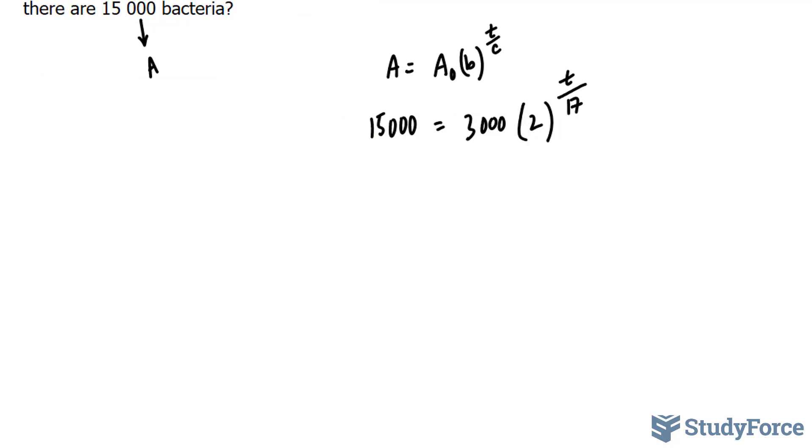What we have to do next is isolate for this t, because that t will tell us specifically the amount of hours it takes for 3,000 to reach 15,000. To do this, we'll first get rid of this 3,000 on the right side, and we do that by dividing both sides by 3,000.